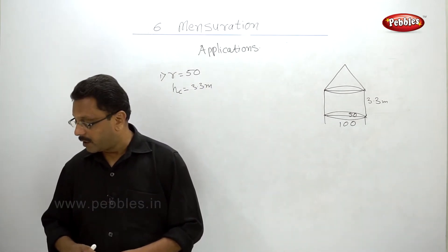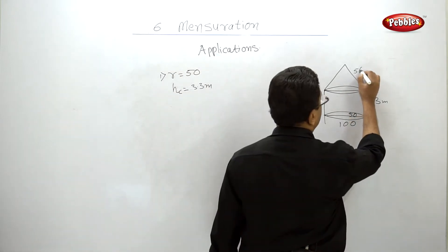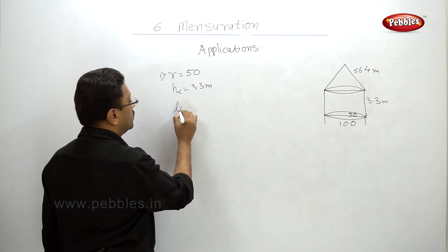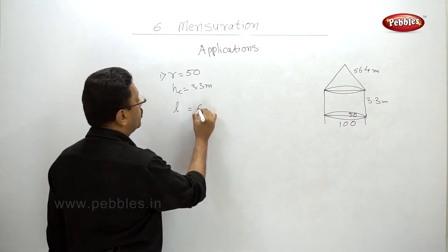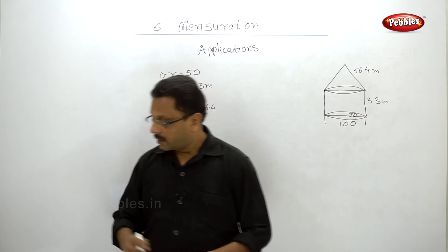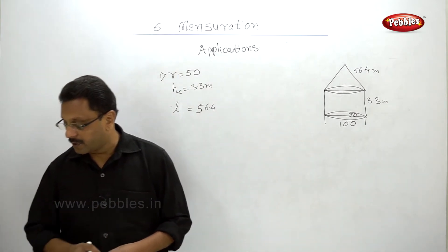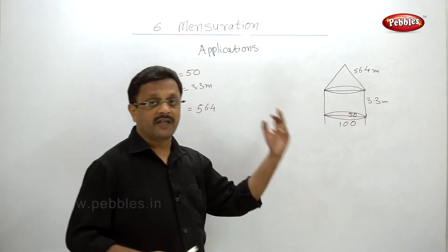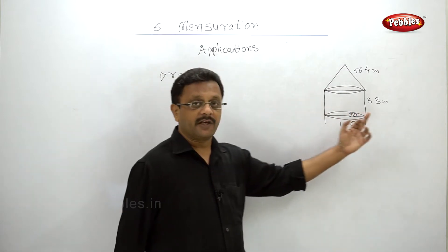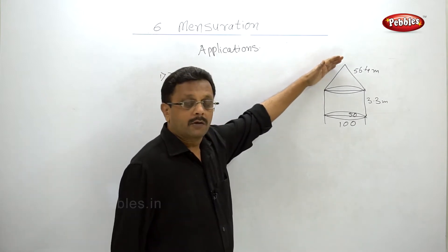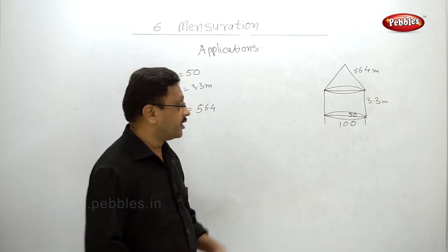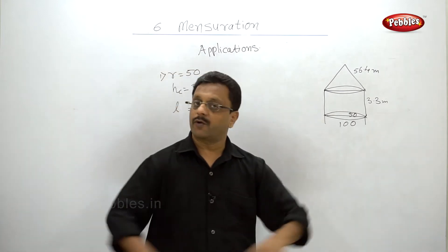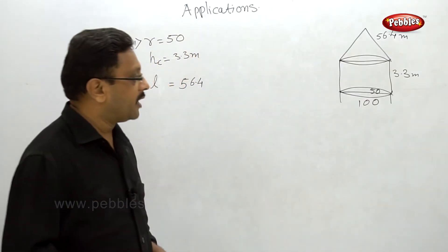The slant height of the conical part is 56.4 meters. We need to find the total canvas used in making the tent. Since the tent is made entirely of canvas, we calculate the total surface area. The bottom is not covered with canvas, so there is no canvas flooring — only the curved surface area is needed.